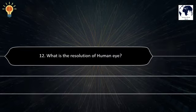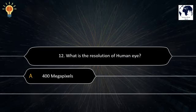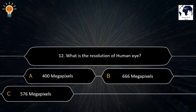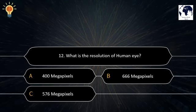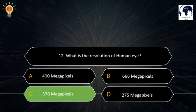Question number 12. What is the resolution of the human eye? Option A: 400 megapixels. Option B: 666 megapixels. Option C: 576 megapixels. Option D: 275 megapixels. The correct answer is Option C — 576 megapixels.